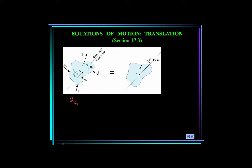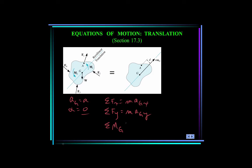In the case of translation, the three equations reduce to: summation of forces in x equals m times a_Gx; summation of forces in y equals m times a_Gy; and since alpha is zero, summation of moments about the mass center equals zero. If it's easier to sum moments about another point A (not the mass center), you can write: summation of moments about A equals m times a_G times d, where d is the perpendicular distance between point A and the vector m times a_G.